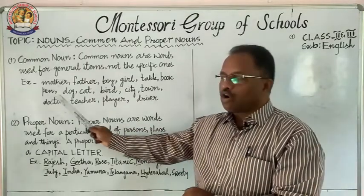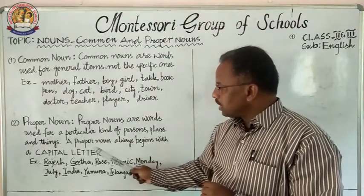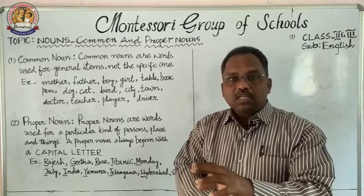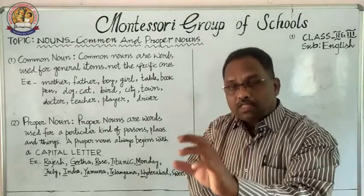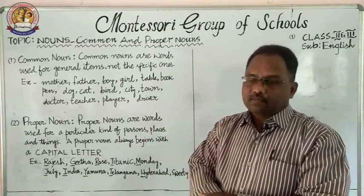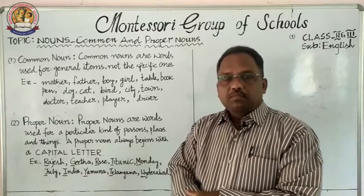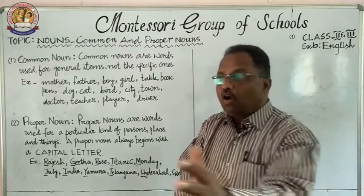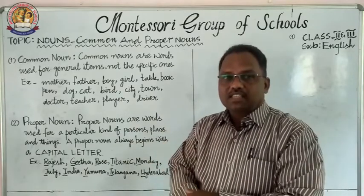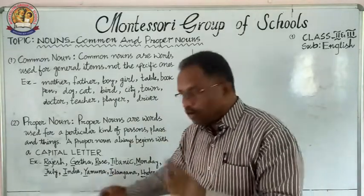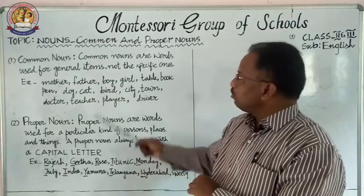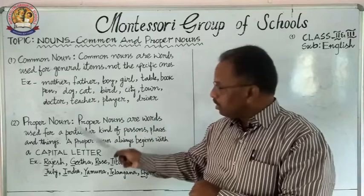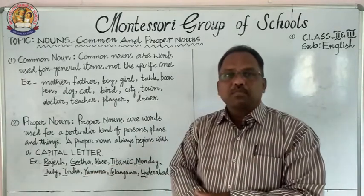In proper noun, the rule says it must always begin with a capital letter, because it refers to a particular person, place, or thing. For example, Rajesh — Rajesh is the name of a particular person, not all boys. Boy is a common noun; when this boy has a name, Rajesh, then Rajesh becomes a proper noun.